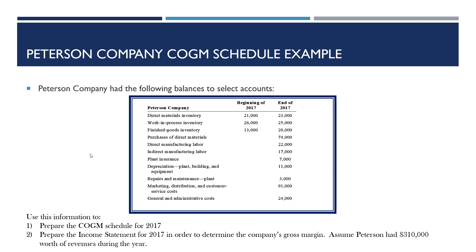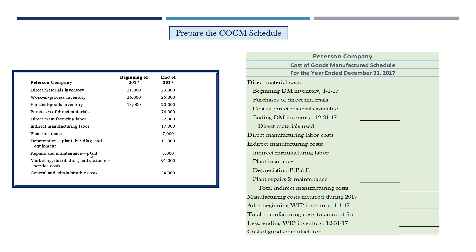Let's start this process by preparing Peterson Company's cost of goods manufactured schedule. We're going to start by figuring out what amount of direct materials they actually used. For this process, you're going to do a very similar calculation over and over again: take the beginning amount of the inventory type and add to it the additions made during the period to find the total amount available. Then subtract what you had left at the end of the period to figure out your actual consumption.